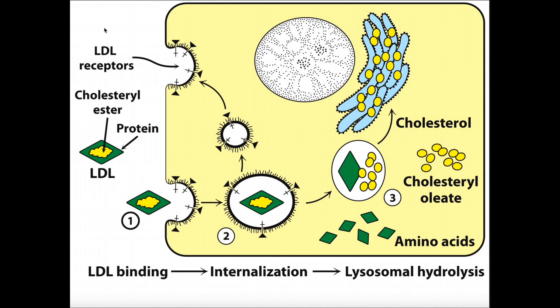One of the purposes for cholesterol delivery to cells is so that those cells can put cholesterol in their membranes. Cholesterol stabilizes the fluidity of the membrane over a wider range of temperatures — it allows the membrane to be fluid at both hot and cold temperatures. As mammals, every one of our cells has cholesterol in its membrane.